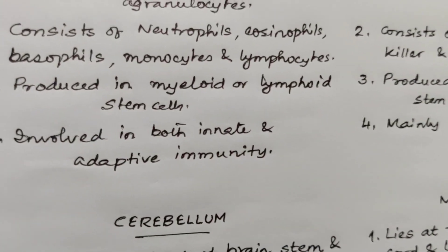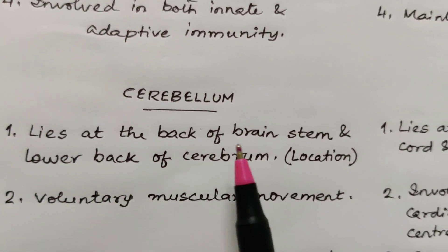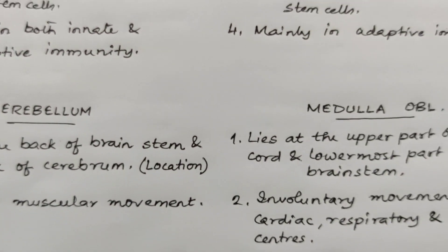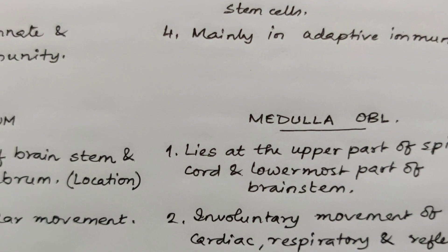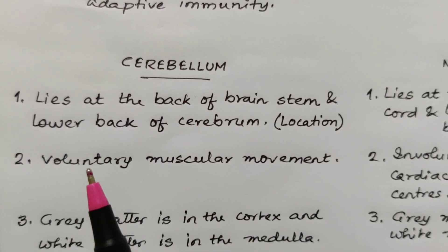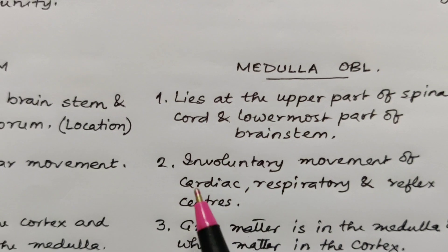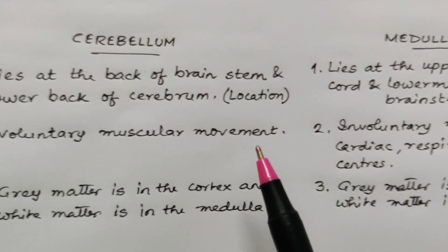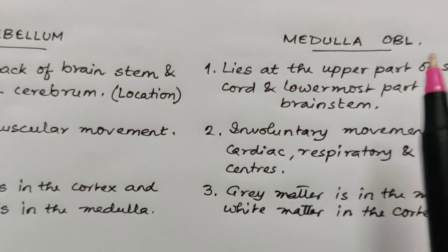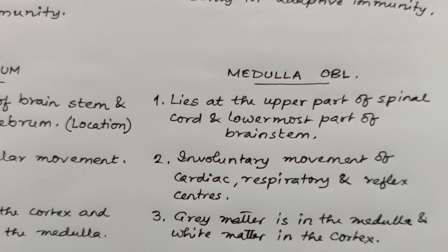Seventh comparison: cerebellum and medulla oblongata. The cerebellum lies at the back of the brain stem and lower back of the cerebrum, whereas the medulla oblongata lies at the upper part of the spinal cord and lowermost part of the brain stem. The cerebellum controls voluntary muscular movement, whereas the medulla oblongata controls involuntary movement of cardiac, respiratory, and reflex centers. The cerebellum has gray matter in the cortex and white matter in the medulla, whereas in the medulla oblongata gray matter is in the medulla and white matter is in the cortex.